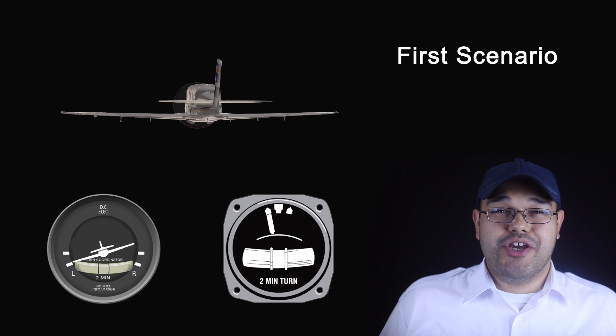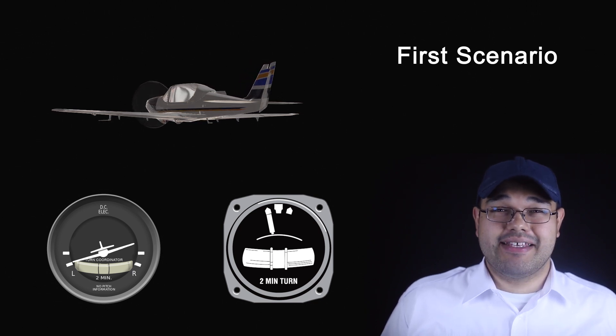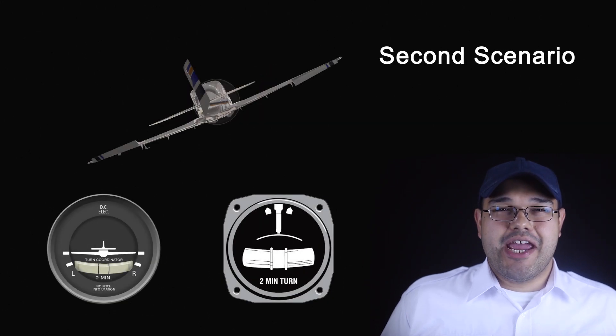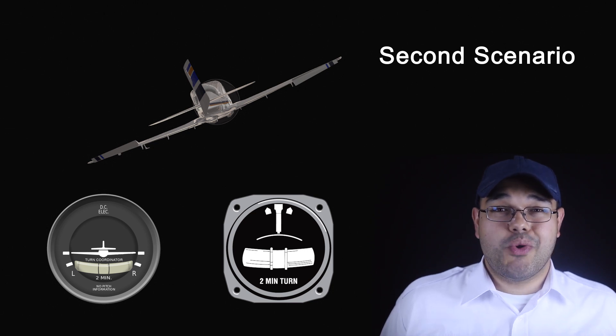It's important to reemphasize that the turn coordinator provides roll information but not bank information. Both the turn and slip indicator and the turn coordinator indicate turn but not bank. Consider two example maneuvers: first, if we yaw the aircraft with wings level, the turn indicator will indicate a turn in the direction of the yaw, despite the fact that the aircraft is not banked. Second, if the aircraft is banked but we prevent a turn with opposite rudder, the turn indicator will remain centered, indicating no turn — the fact that the aircraft is banked has no effect. So the turn indicator displays turn information independent of bank.